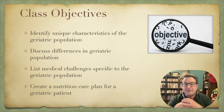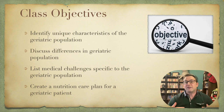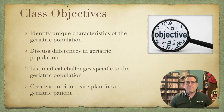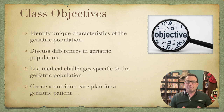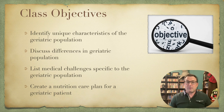So what are the class objectives here? We want to identify unique characteristics of the geriatric population. We want to discuss differences in the geriatric population — both the geriatric population versus the average adult population and the differences within the geriatric population. We're going to list medical challenges specific to the geriatric population and create nutrition care plans specifically for geriatric patients.